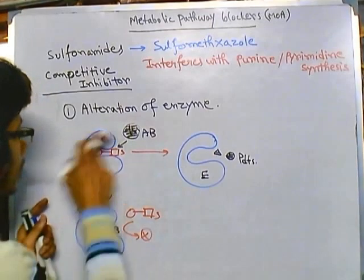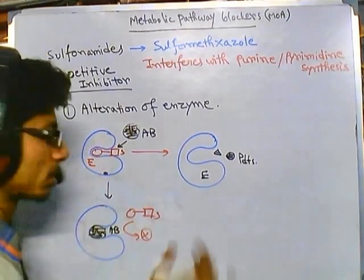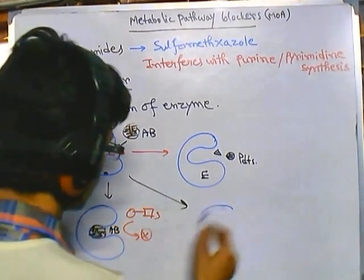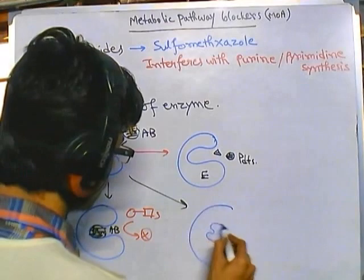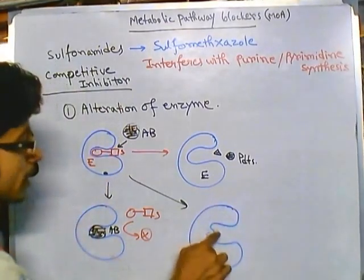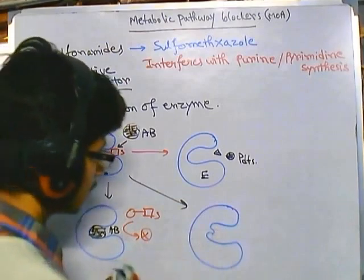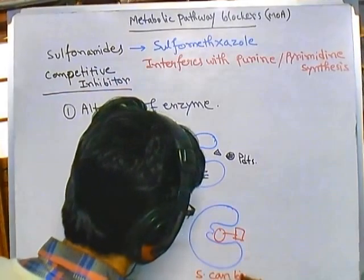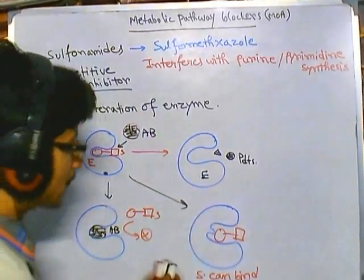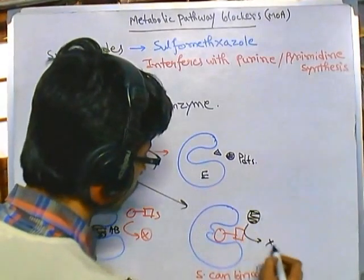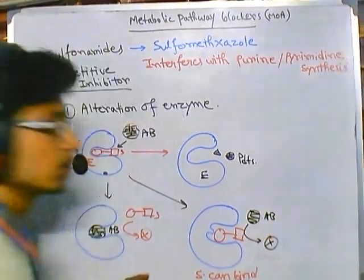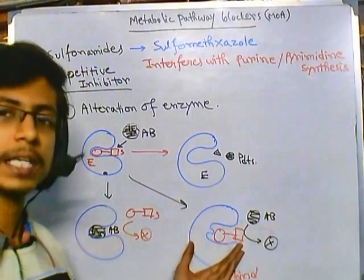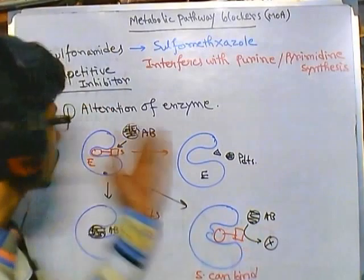But now, if bacteria introduce a slight distortion or alteration to the enzyme structure, the substrate can still bind with it, but the antibiotic is unable to bind with that region. That's what they are doing — they altered the enzyme in such a way that the antibiotic is unable to bind with it, but the substrate can still bind. That's the first kind of approach bacteria can take.